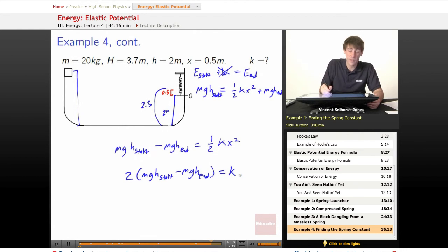We just plug and chug. So 2 times mgh start minus mgh end equals k, and we're also going to divide by that x squared, x squared. We plug everything in and we're going to get 2 times 20 times 9.8 times, well, doesn't really matter in this case, but it would be a little bit easier to figure out what's on the inside first.